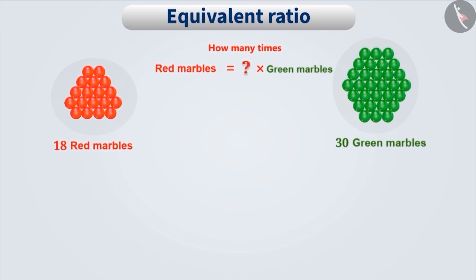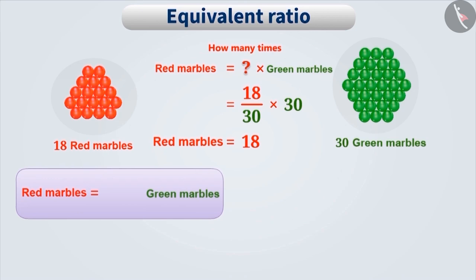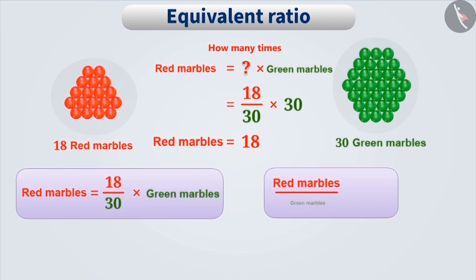If we multiply the number of green marbles — that is 30 — by 18 by 30, we will get the number of red marbles, that is 18. So we can say that the number of red marbles is 18 by 30 times the number of green marbles, or that the number of red marbles is 18 by 30 of the number of green marbles.